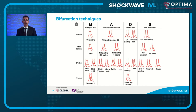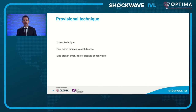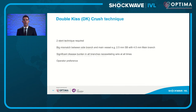There are really four broad techniques. First, the provisional technique - a single stent in the main vessel - best suited when the side branch is free of disease or non-viable. A single stent across that bifurcation is unlikely to result in harm; if the side branch is compromised, you could switch to T and protrusion as a bailout strategy. This single stent strategy applies in about 85% of cases. There are scenarios where two stents are required from the outset.